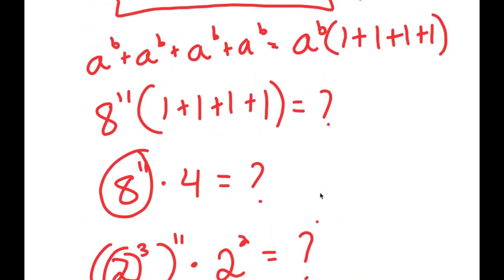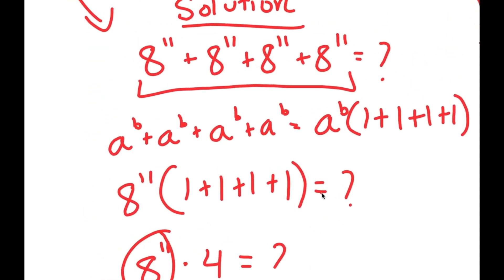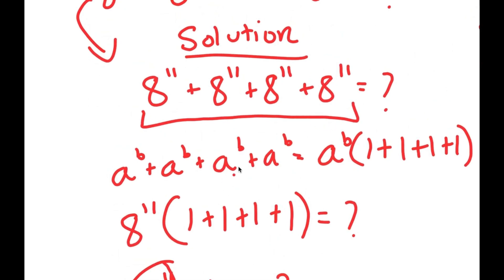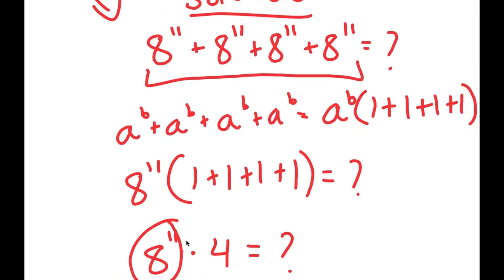Also, the only way this solving process could have been faster is in the first step. I took three steps to rewrite 8 to the power of 11 added to itself 4 times as 8 to the power of 11 times 4, when I could have just recognized that when the same term is added to itself x amount of times, it's just that term times x. So that's a faster way.